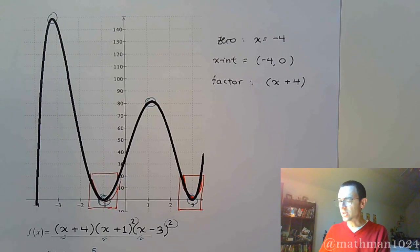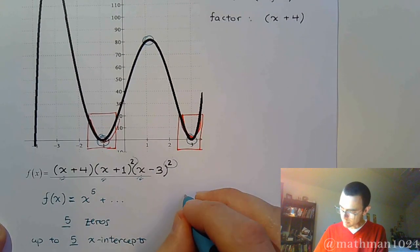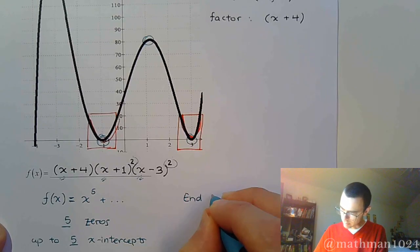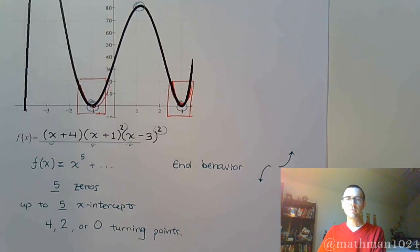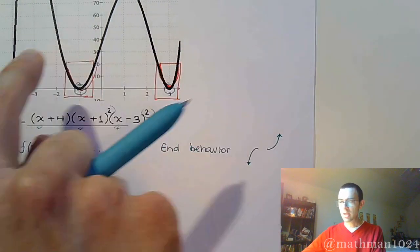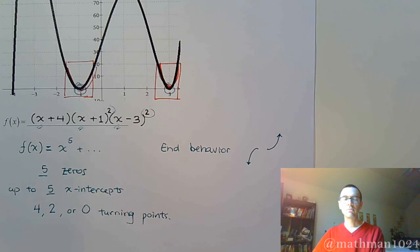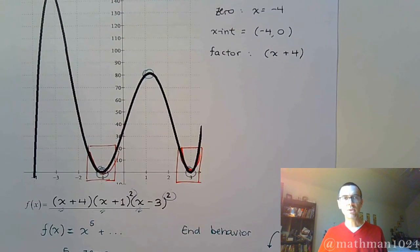Also, another thing to consider is that this is, we're saying x to the 5th, which means the end behavior is supposed to be going up on the right and down on the left. And you see that's what's going on here. We're going up on the right and we're coming down here on the left. So it all fits in together with what we have. And it all goes back to this graph. Let's try one more.